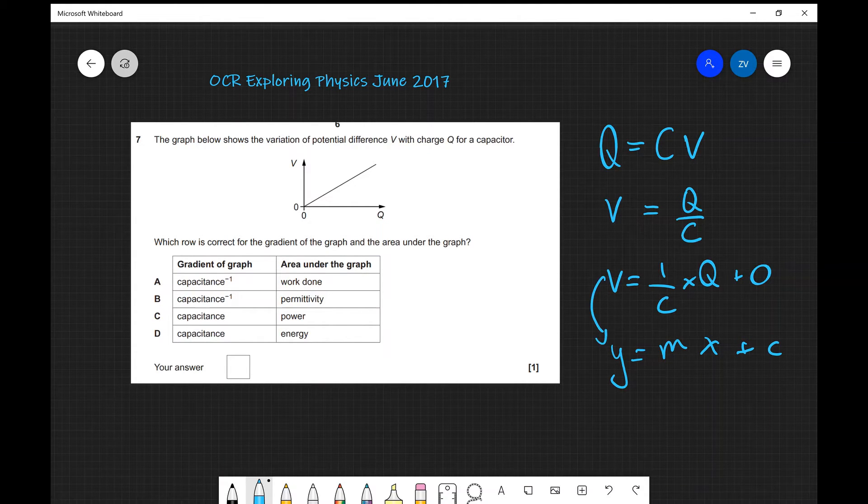And we can see that if V is on the Y axis, if Q is on the X axis, then the gradient will be 1 over the capacitance. So because our gradient M will have to equal 1 over C. And the graph should be a straight line through the origin. So that narrows down the answers from A to B. In this case, the correct answer has got to be A.